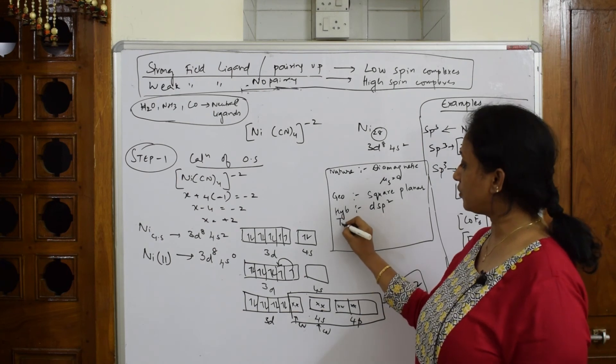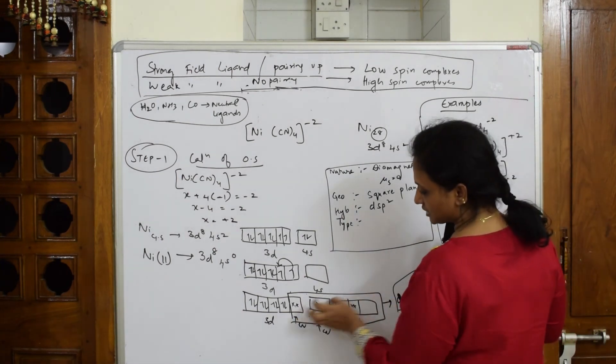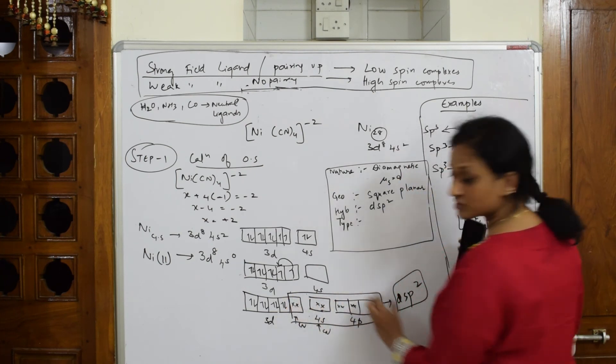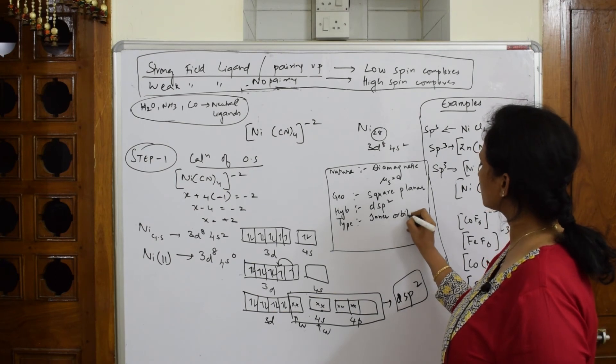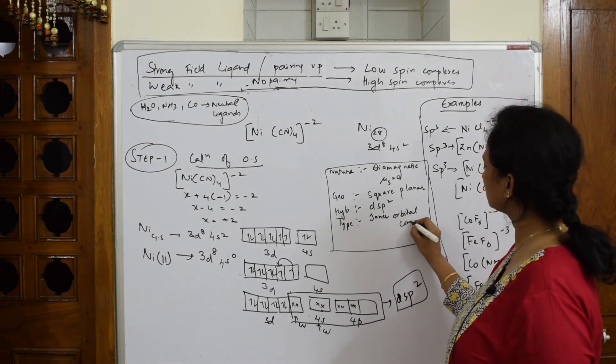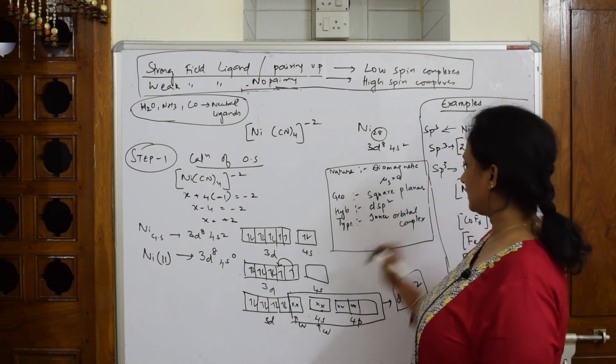The type of complex: now careful, see it is going into inside, it's occupying the inner orbitals of d. That is why it is called inner orbital complex because it is going inner n minus 1 d.